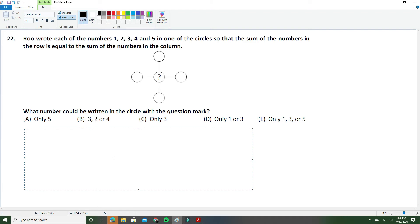But anyways, let's get started. Rule: write each of the numbers 1, 2, 3, 4, and 5 in one of the circles so the sum of the numbers in the row is equal to the sum of the numbers in the column. What number could be written in the circle with the question mark? The answer choices for this problem are: A) only 5, B) 3, 2 or 4, C) only 3, D) only 1 or 3, E) only 1, 3 or 5.